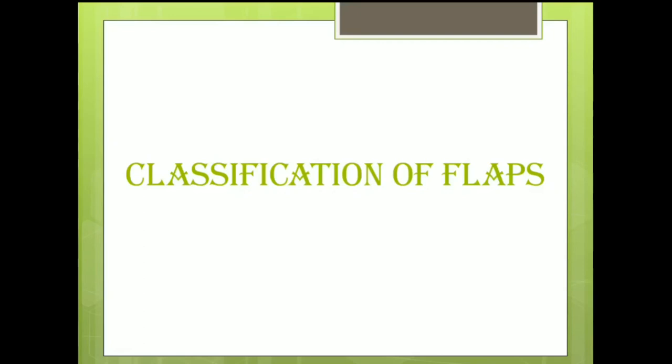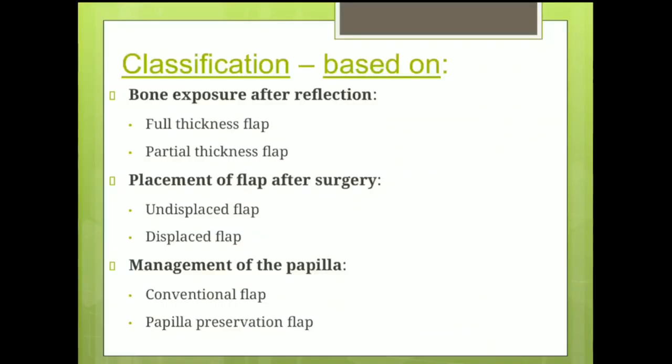Periodontal flaps can be classified based on three criteria. Based on the exposure of bone after reflection, a flap can be either full thickness or split thickness or partial thickness. Based on the position of flap replacement after the surgery, it can be an undisplaced flap or a displaced flap — be it apically, coronally, or laterally displaced.